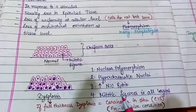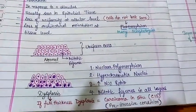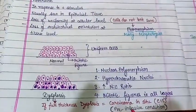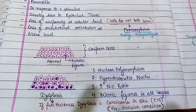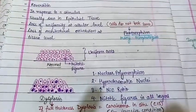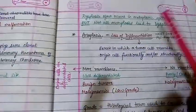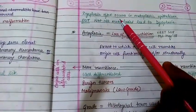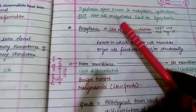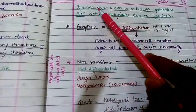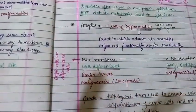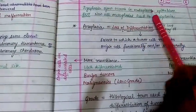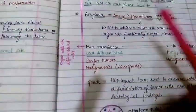If all layers undergo dysplasia, it is known as carcinoma in situ, which is a pre-invasive condition. Dysplasia often occurs in metaplastic epithelium, but not all metaplasia leads to dysplasia. Dysplasia involves metaplasia (change from one cell form to another), but all metaplasia does not involve dysplasia.